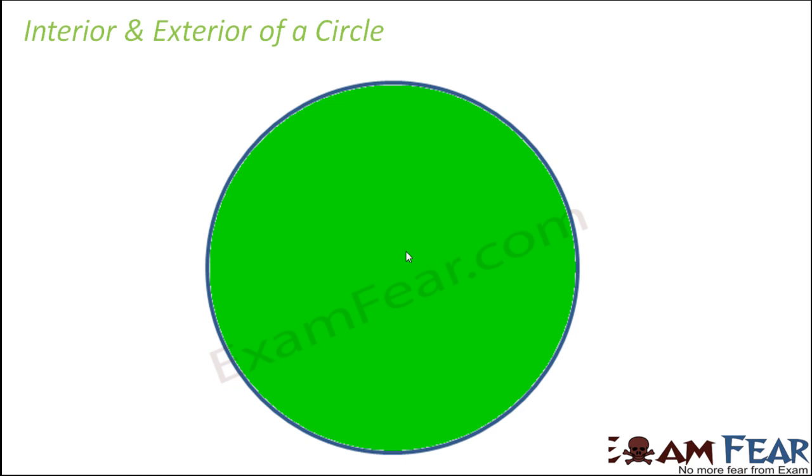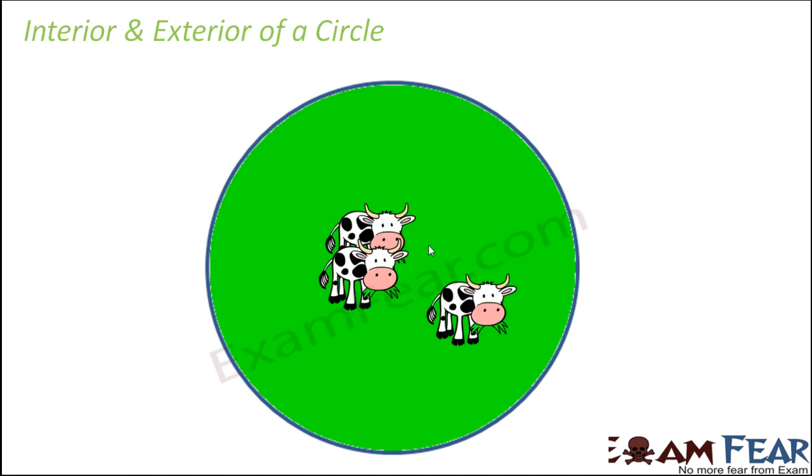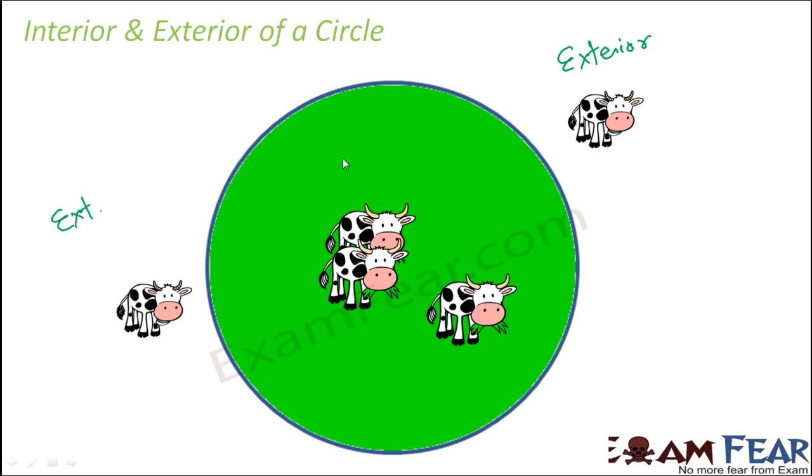This entire greenery is the interior of the lawn and anything located outside it is considered to be the exterior. Let us consider these cows which are grazing in this field. Are they present inside or outside the field? Obviously they are inside, so they are in the interior. Whereas certain cows present outside the field are in the exterior of the circle. If you have a point located exactly on the boundary, then it is said to be on the circle. That's how we distinguish between interior and exterior of a circle.